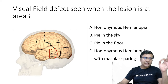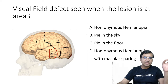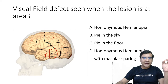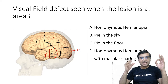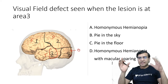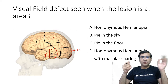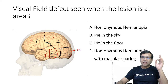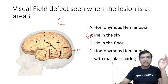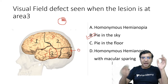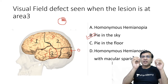Looking at the anatomy of the brain — this is the frontal lobe, this is the parietal lobe, here is the temporal lobe, and area 4 is the occipital lobe. They are asking: when the lesion is at level 3, which is the temporal lobe, what would be the type of defect? The answer is B — pie in the sky, which is a superior quadrant anopia.